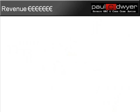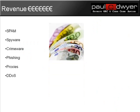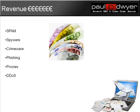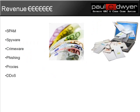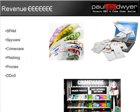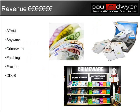Where does the revenue for the underground economy come from? The main areas are spam, which is still a huge business. Spyware and crimeware are still a huge area. And phishing proxies and DDoS — such as DDoS for hire — can be used as part of a crime. Botnets are an essential and integral part of these actual campaigns.